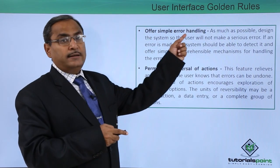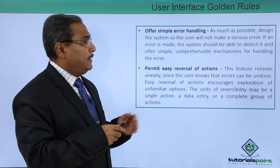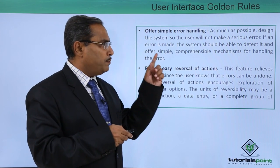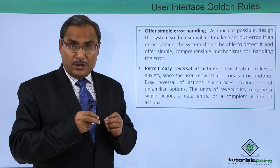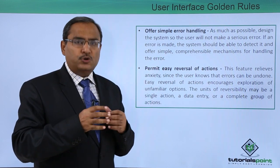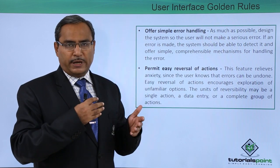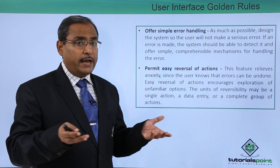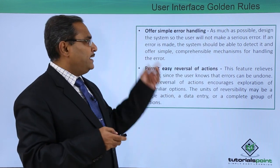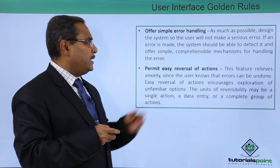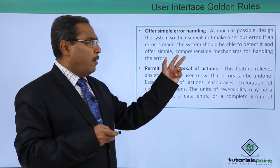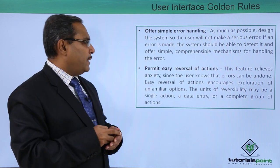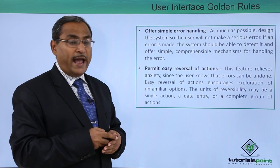The next rule is to offer simple error handling. As much as possible, design the system so that users will not make serious errors. Whenever a user gives wrong input, a dialogue box should communicate this appropriately. If an error does occur, the system should be able to detect it and offer simple, comprehensible mechanisms for handling it.